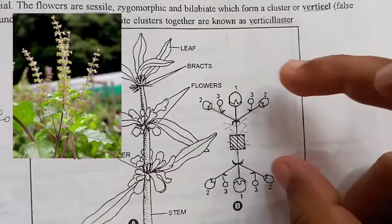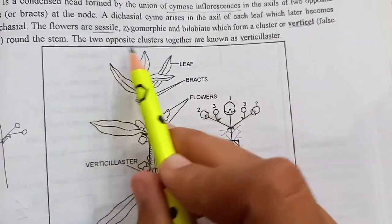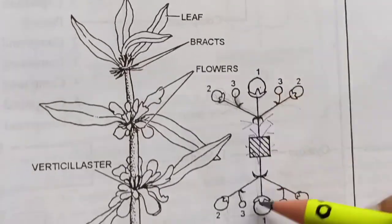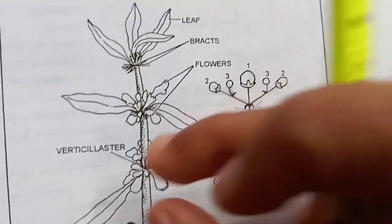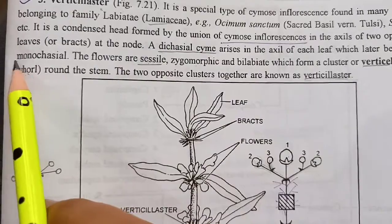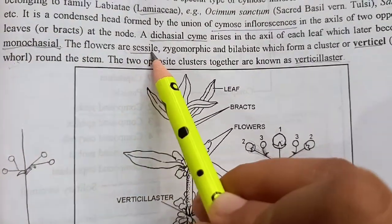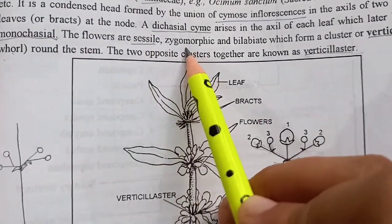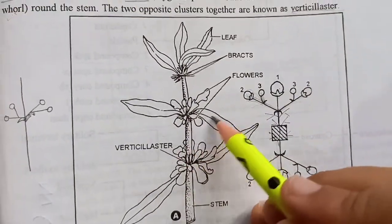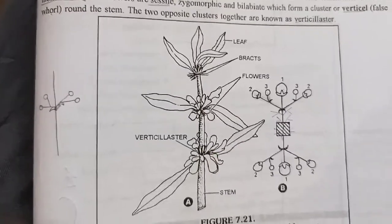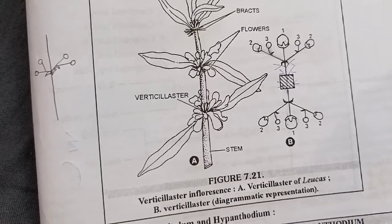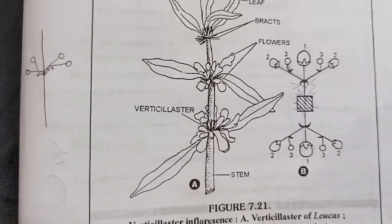Yeh jo false whorl humein diktha hai, ise hum kehte hain verticelle. Verticelle ka matlab hota hai false whorl. Aur in dono opposite clusters ko agar hum saath mila dein — the two opposite clusters together are known as verticilaster. Toh yeh dono opposite false whorls hain; inko saath mila dein toh usse kehenge verticilaster. Flowers mein pehle dichasial cyme aata hai, phir monochasial, aur yeh flowers sessile hote hain aur zygomorphic yaani bilateral symmetry show karte hain. Tulsi ke jo flowers hote hain woh arrange hote hain verticilaster inflorescence mein.